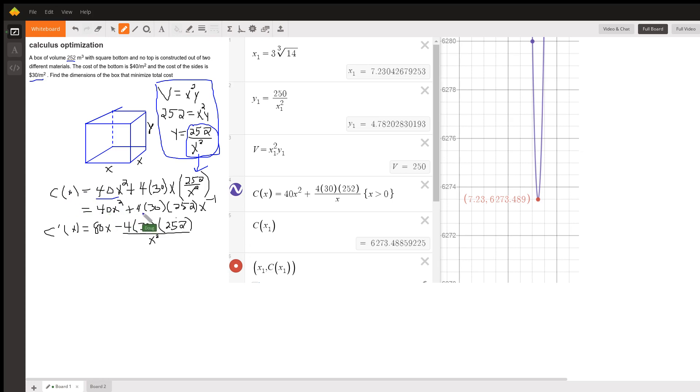And I've written this second term as 4 times 30 times 252 times x to the minus 1 because one of these x's cancels out, and by the way, notice over here that I've created the cost function on the Desmos online graphing calculator indicating that x must be greater than 0. First of all, we can't divide by 0, and secondly, it wouldn't make any sense to have a square base with a side length that was negative or even 0.